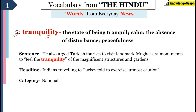The second word is tranquility. This is a very common word. Tranquility basically means being calm — a state of peacefulness where there is no disturbance. It's a state of being tranquil. Tranquil also means calm or peaceful; absence of disturbance. For example, if you're going on a tour to a mountain area or some quiet and peaceful place, that's a state of being tranquil. The sentence was: 'He also urged Turkish tourists to visit landmark Mughal-era monuments to feel the tranquility of the magnificent structures and gardens.' So it urged Turkish people to visit Mughal-era monuments because you'll feel a sense of peacefulness and calmness there.